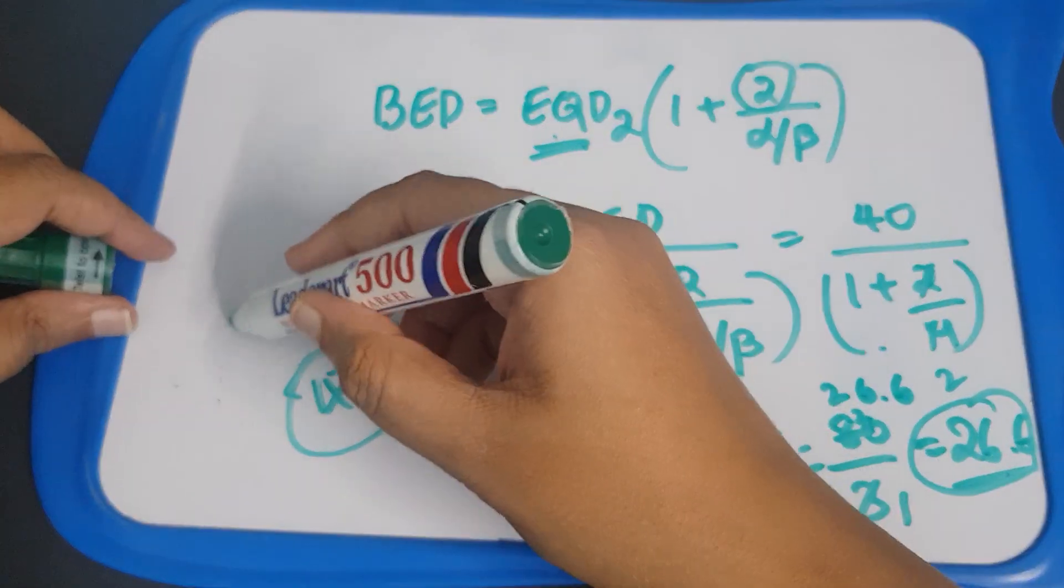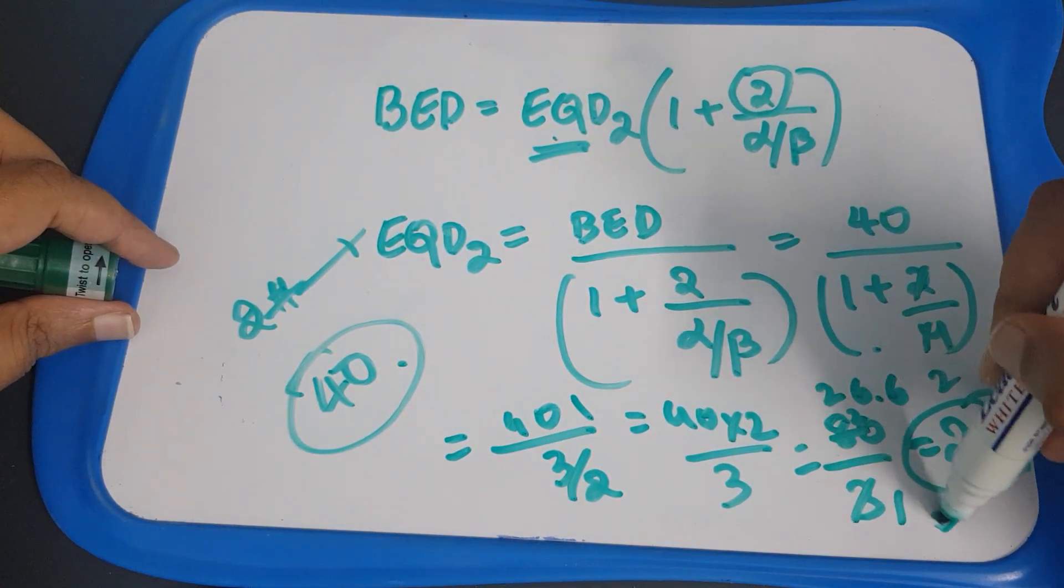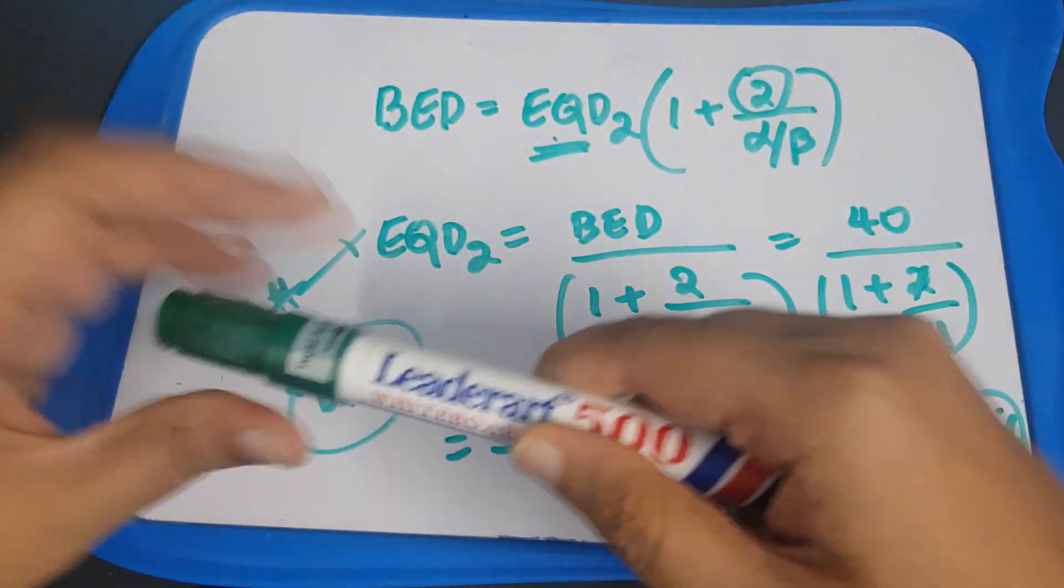But if we have to give 2 gray per fraction, then the effectiveness is, the total dose that you have to give is 26.6 gray. That's it.